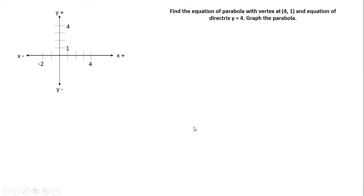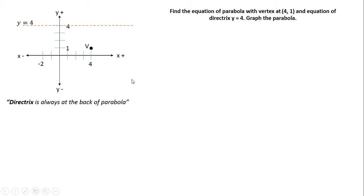From the given vertex (4, 1) and equation of directrix y = 4, take note that the directrix is always at the back of the parabola. Therefore, our parabola opens downward, with the directrix at the back.